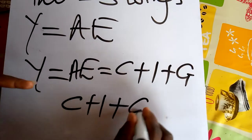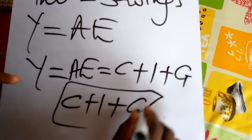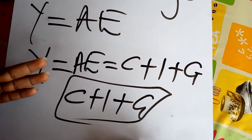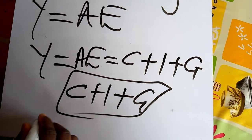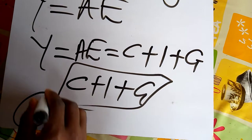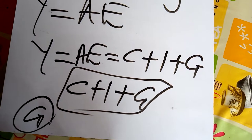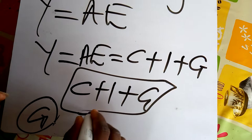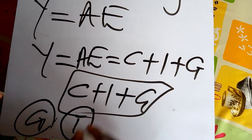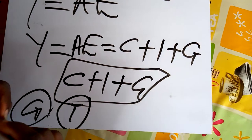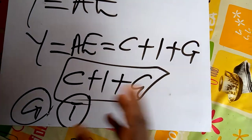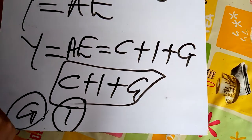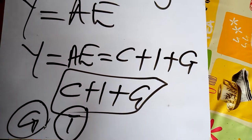Government intervention can be in two forms: G, which is government spending on citizens, and T, which is the tax mechanism through which the government also gets its revenue.